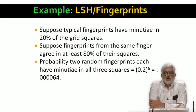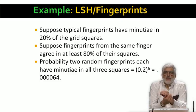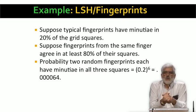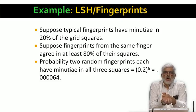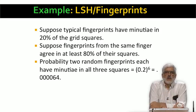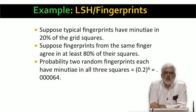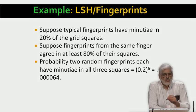First, if the fingerprints come from different fingers, then the probability that both prints are placed in this bucket is really tiny. For each fingerprint, there is a 20% chance of having minutiae in each of the squares, so the chance of hitting all three is 0.2 cubed. And for both fingerprints to hit, the probability is the square of that — that is, 0.2 to the sixth power, or 0.000064.